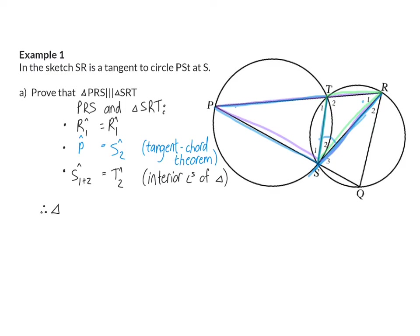Now when you write down the similarity, the order of the letters are very important. So I would suggest writing it down just like you paired them up just now. So I'm going to start with RPS, and that will be similar to the letters on the other side, which will be RST, and my reason for that is angle, angle, angle.